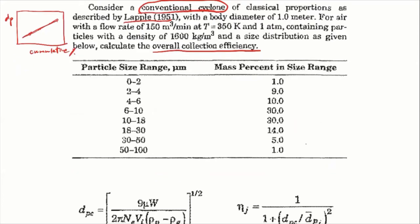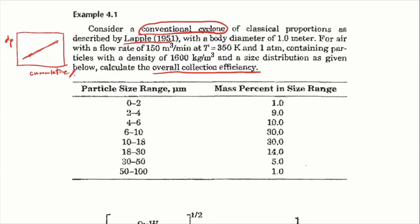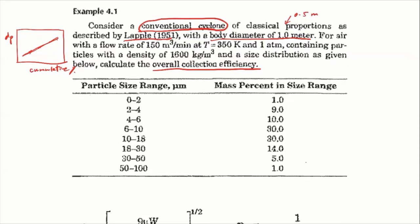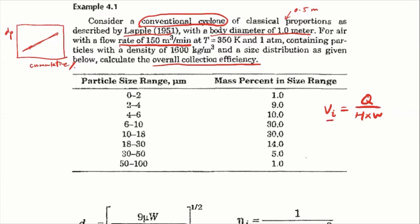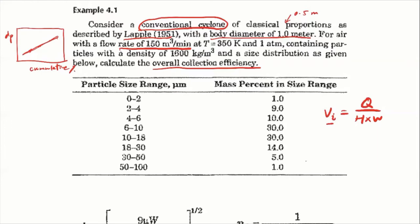For this problem, we're using the conventional cyclone dimension with body diameter of one meter, which is quite convenient. It has a flow rate of 100 cubic meters per minute. The flow rate decides the inlet velocity — higher flow rate means higher particle velocity, making it easier for larger particles to get collected. We also assume certain environmental conditions: temperature, pressure, and particle density of 1,600 kg per cubic meter.